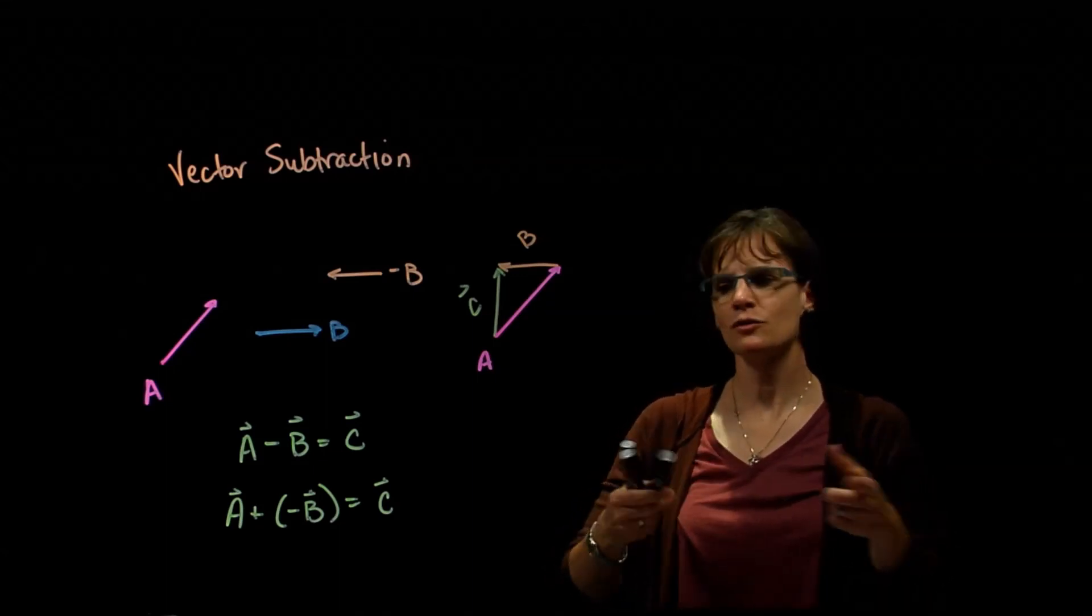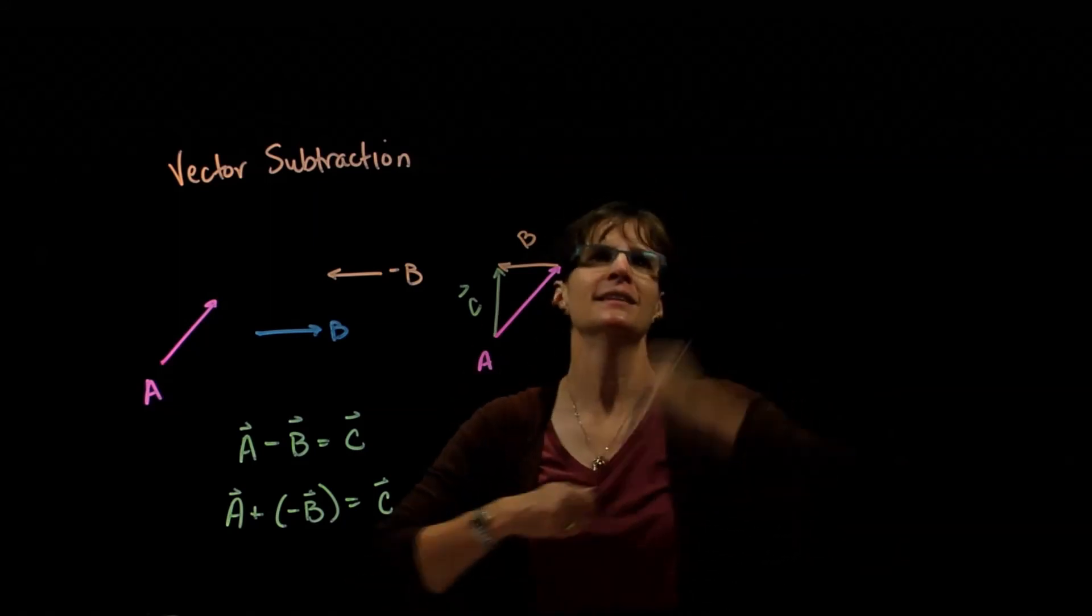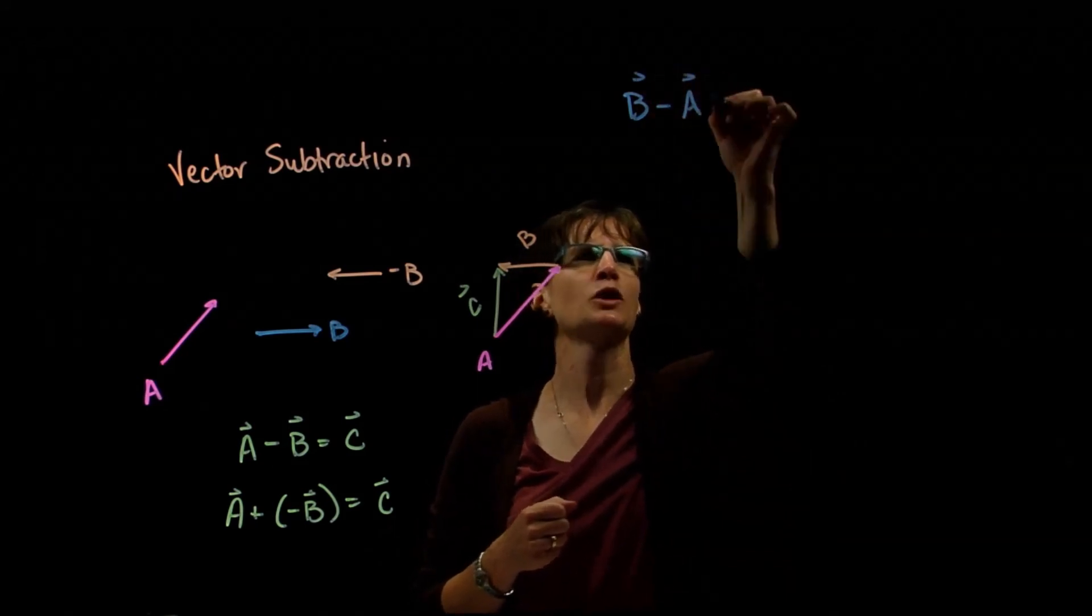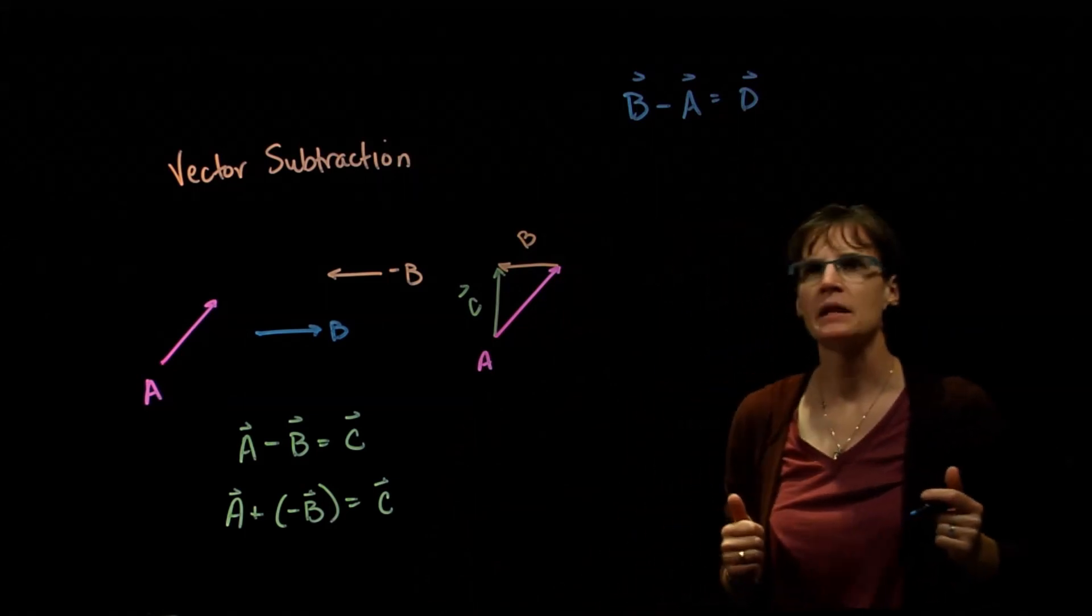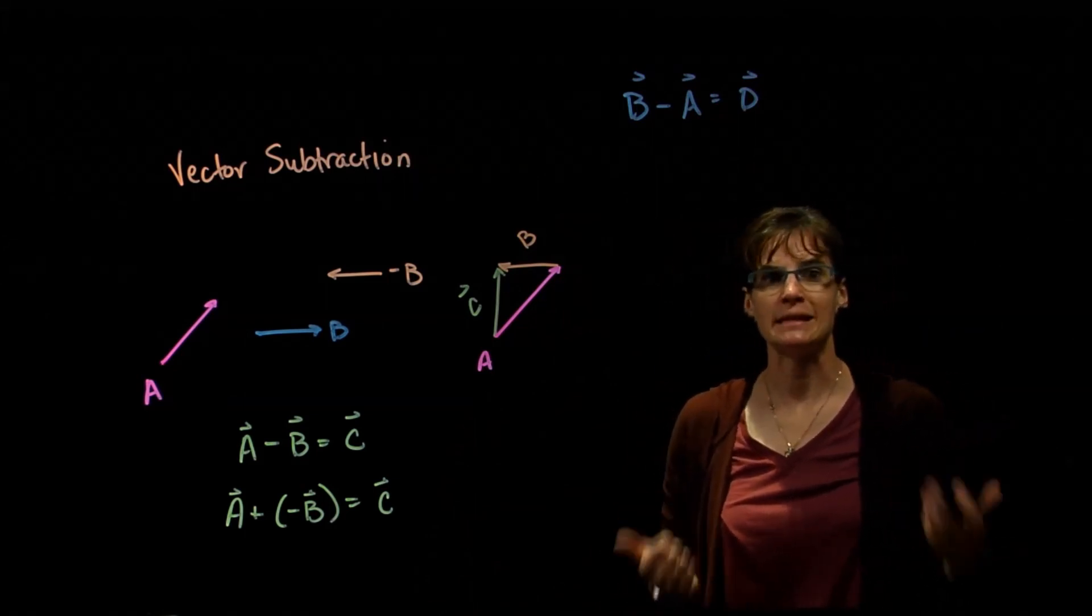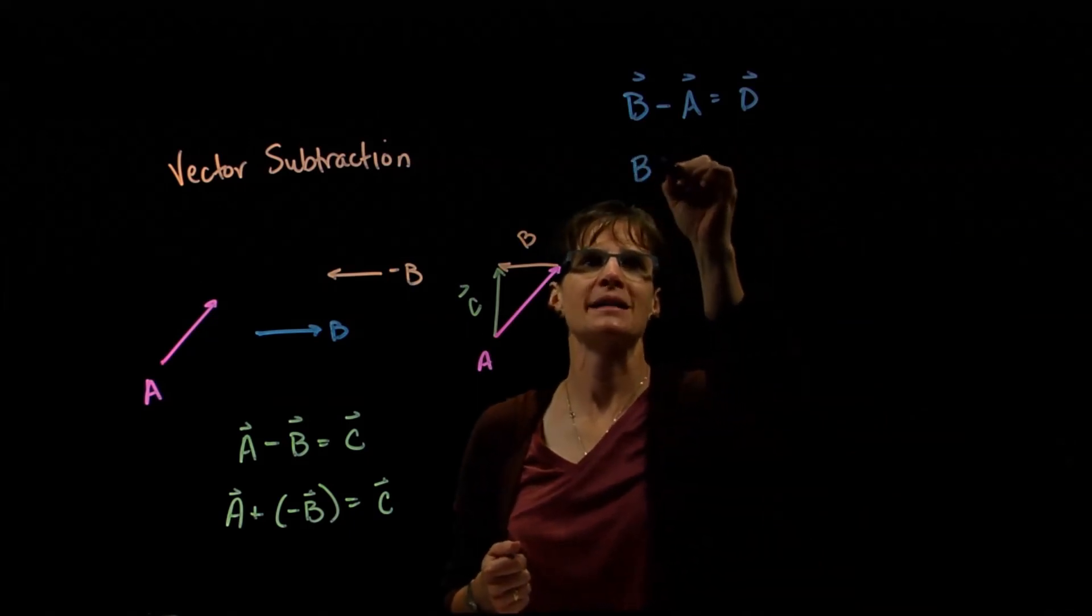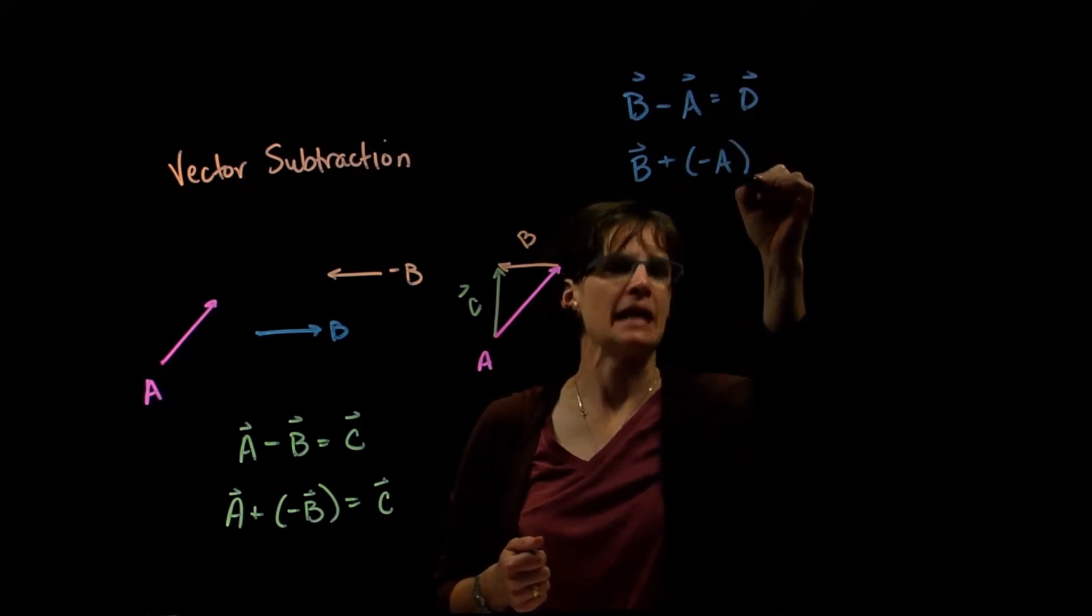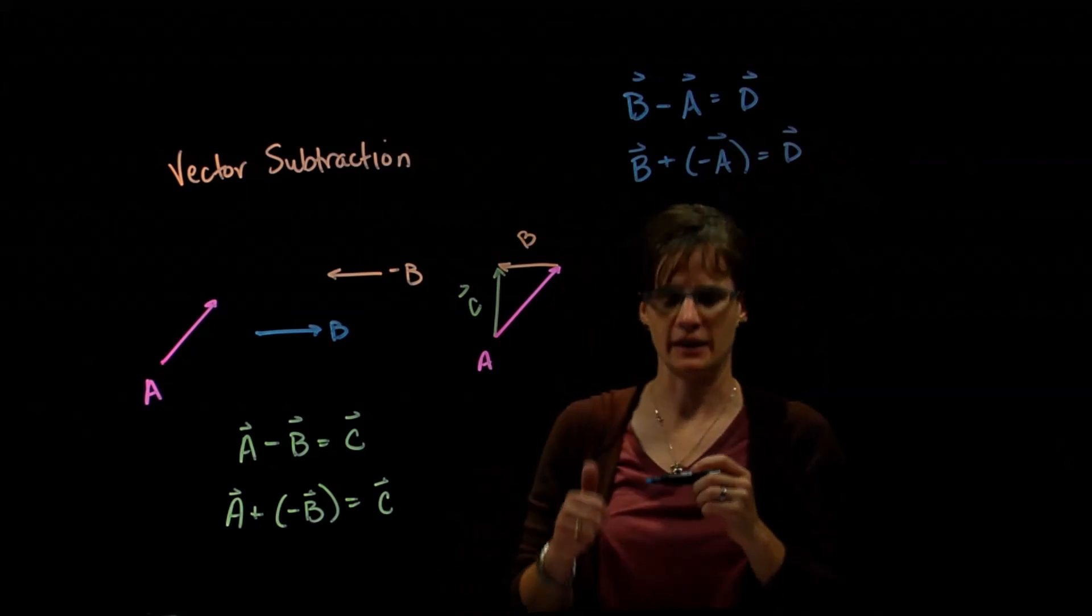What if I wanted to do, this is another practice. Let's do instead of A minus B, let's do vector B minus A. And we'll call that resultant vector D just to distinguish. So here's my resultant vector D that I'm now interested in. Well, remembering that B minus A is the same as B plus negative A. That's going to be resultant vector D.